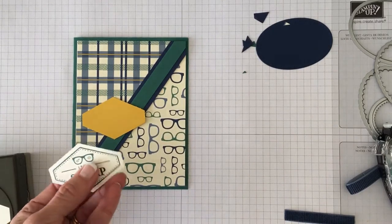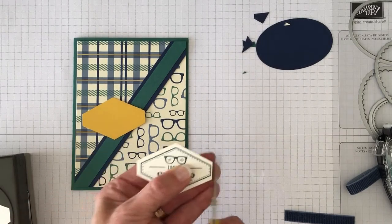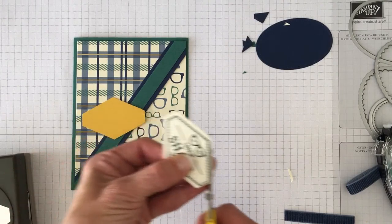Then I was like oh okay no that doesn't fit on there. So what I did is I just took my paper snips and I went right along the edge of the stamped image. It's very easy to fussy cut when it's a nice straight line.